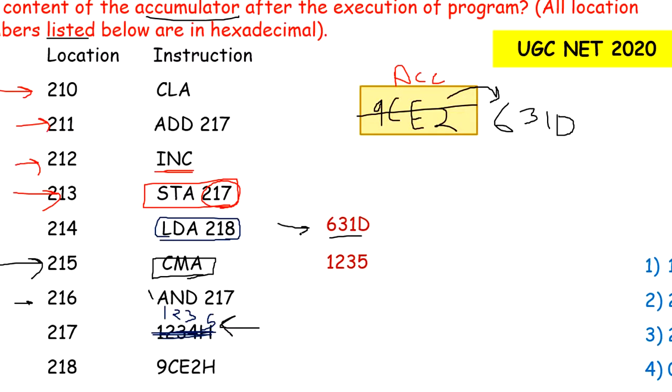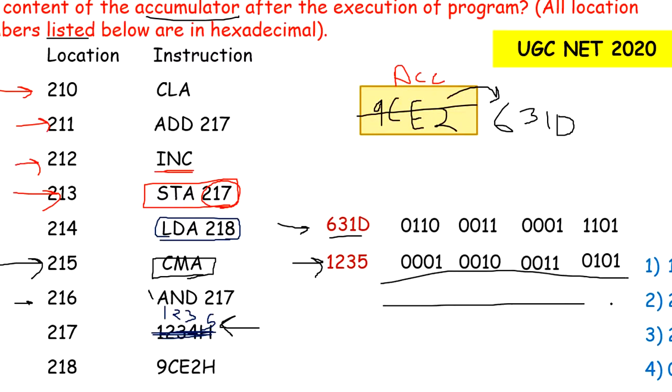To perform AND operation, first convert to binary. First convert 631D to binary: 6 becomes 0110, 3 becomes 0011, and so on. Similarly convert 1235 to binary. This is our number in binary. Now you need to find the AND. AND operation means 1 and 1 equals 1, all others equal 0. So this is 0101, this will be 0010.